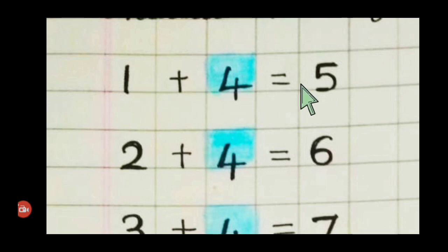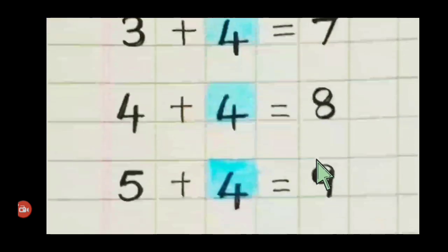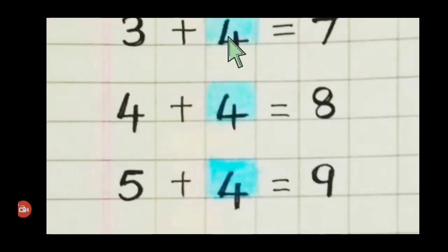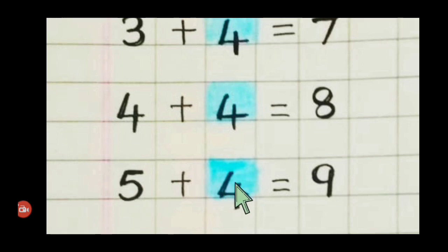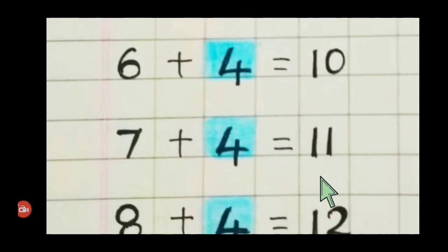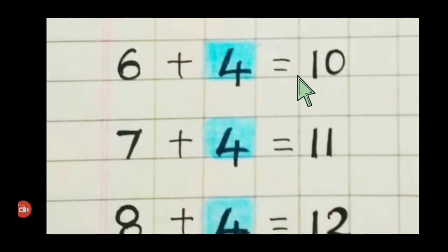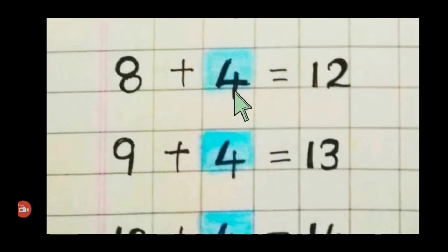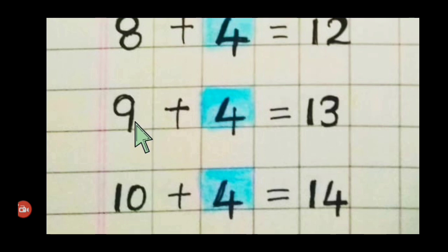Let's repeat again. One plus four is five. Two plus four is six. Three plus four is seven. Four plus four is eight. Five plus four is nine. Six plus four is ten. Seven plus four is eleven. Eight plus four is twelve. Nine plus four is thirteen. Ten plus four is fourteen.